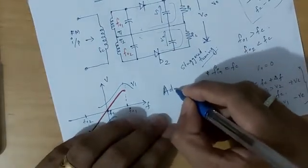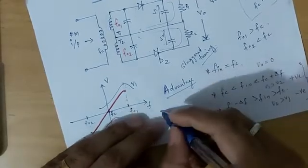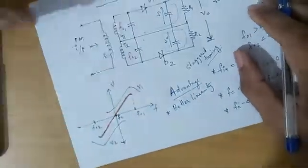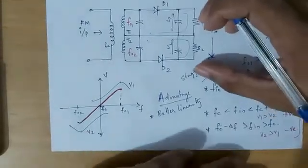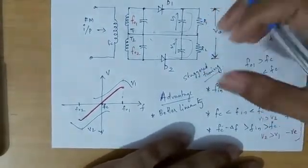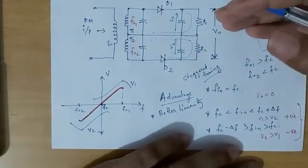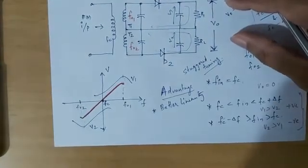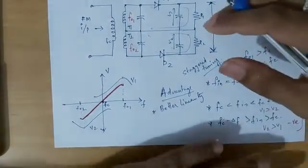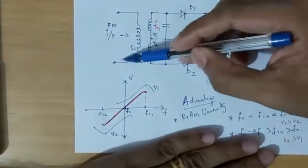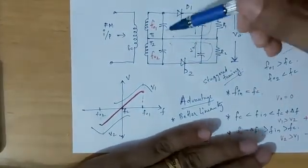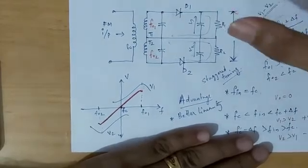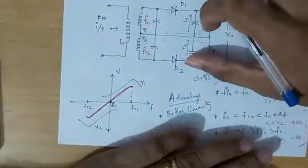Another advantage is better linearity and more complete demodulation of the output. However, the main disadvantage is the difficulty in tuning the entire circuit: the primary winding must be tuned to Fc, and the two secondary windings must be tuned to F01 and F02 respectively, making alignment complex.